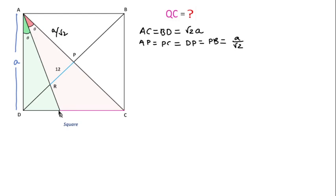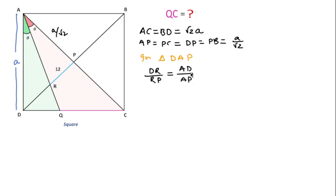Since AQ is the angle bisector of angle DAP, AR will also be the angle bisector of angle DAP. So in triangle DAP, we can write using the angle bisector theorem that the side DP is divided in the ratio of the sides containing equal angles. This means DR/RP = AD/AP. RP is 12 units, AD is A, and AP is A/√2. The A's cancel, so DR = 12√2.